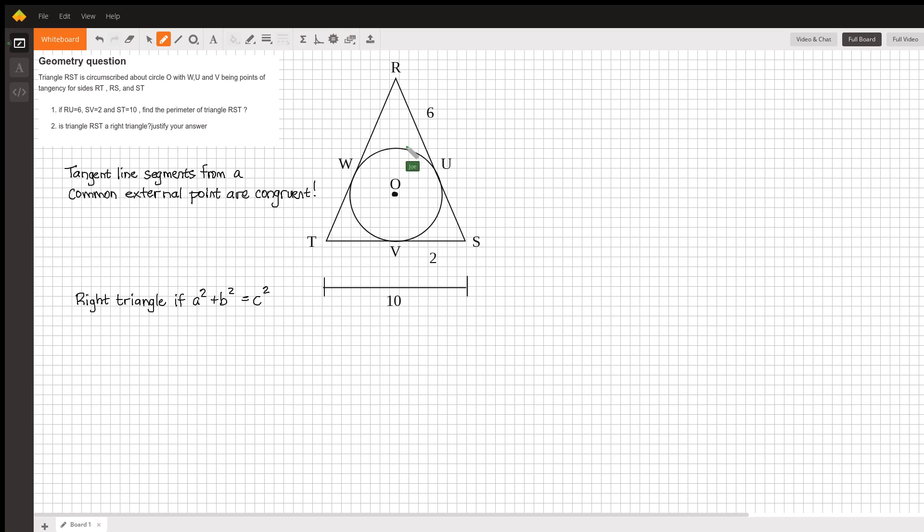So, for example, we were told that the distance from R to U was equal to 6, so we also know that the distance from point R to point W must also be equal to 6. We were told that the distance from S to V was equal to 2, and so the tangent line that also starts at S and goes to U must also be 2.